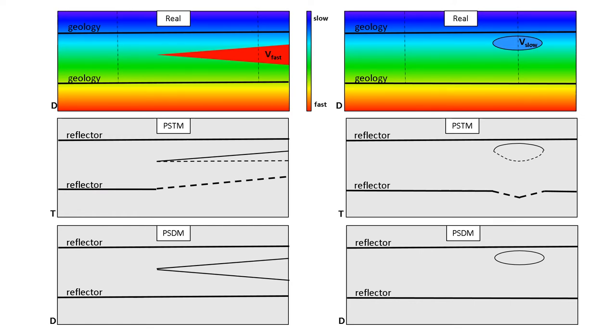Similarly, on the right, where it takes longer to go through this anomaly compared to an equal distance on this side, things get sagged down and pulled down. So now our base reflector is what's called velocity sagged, because it takes longer to travel through here.